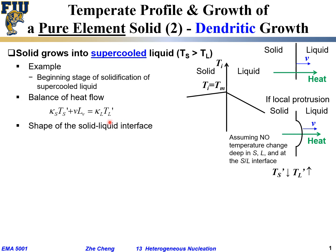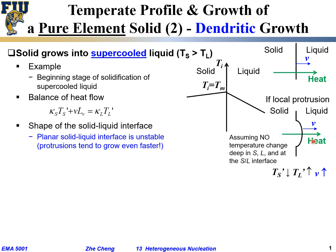Going back to the heat balance equation: T'_l (liquid temperature gradient) gets larger while κ_s · T'_s gets smaller. The only way to maintain balance is for the velocity to increase — the protrusion would grow faster as solidification proceeds. If a protrusion grows faster than the surrounding flat region, the planar solid-liquid interface is unstable, and the protrusion tends to grow faster and faster.